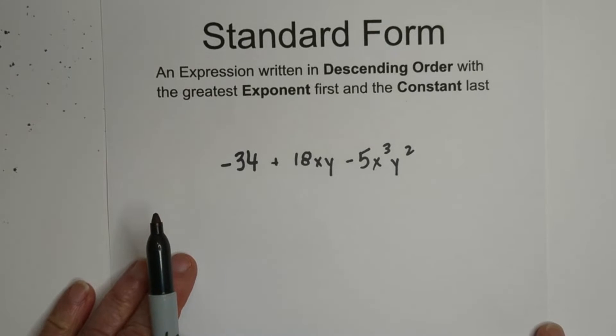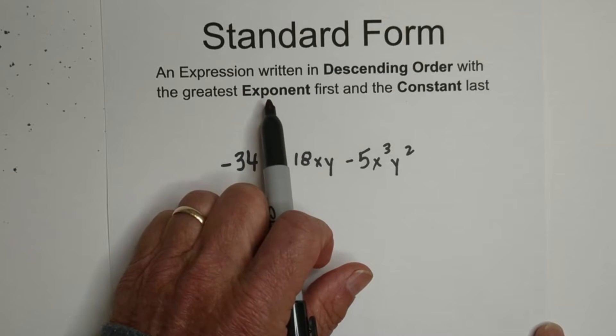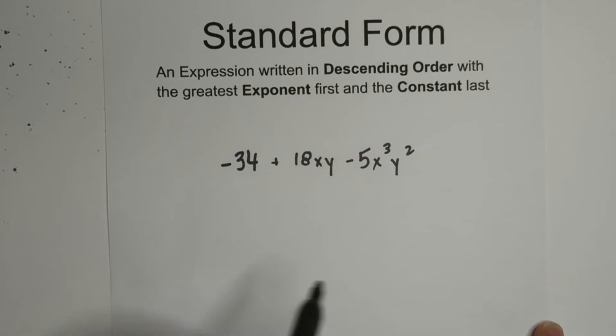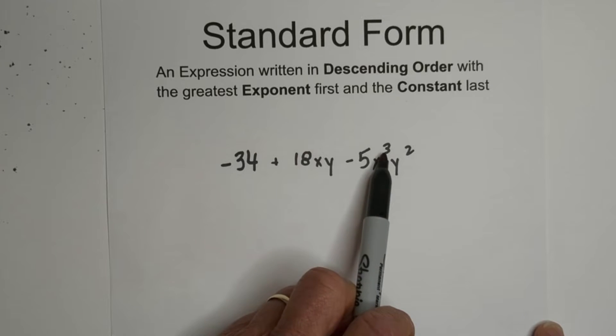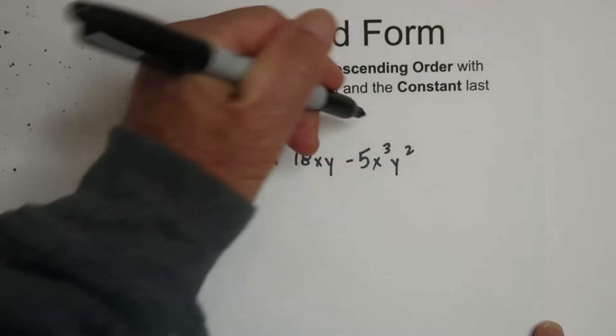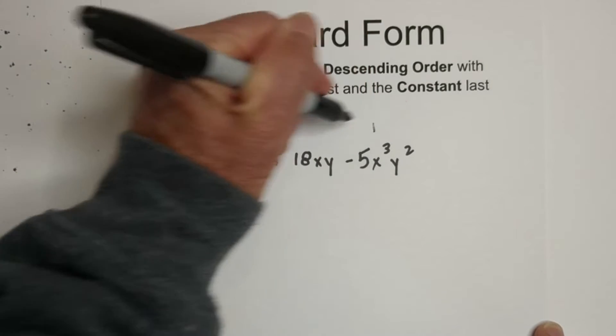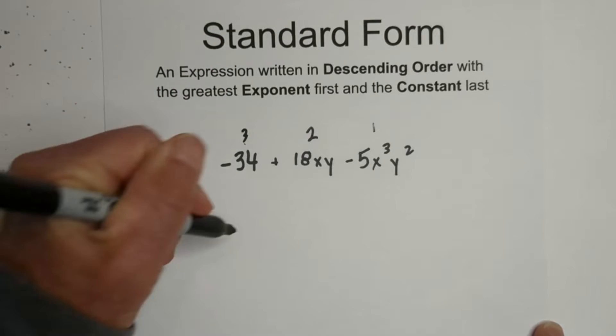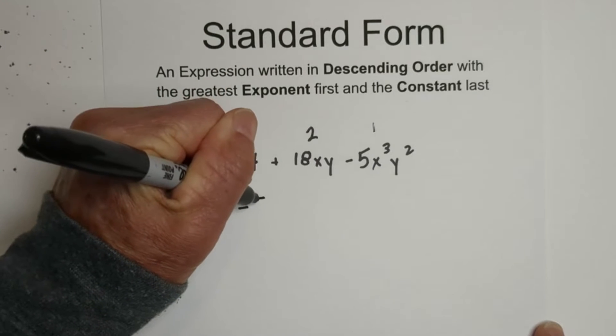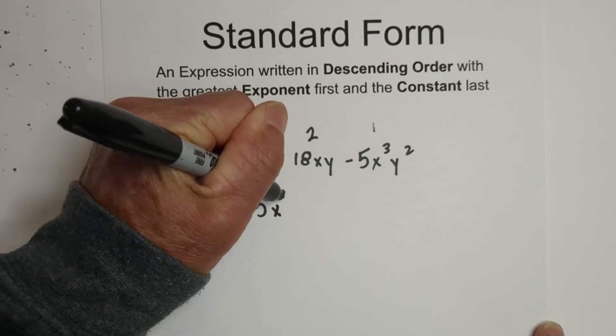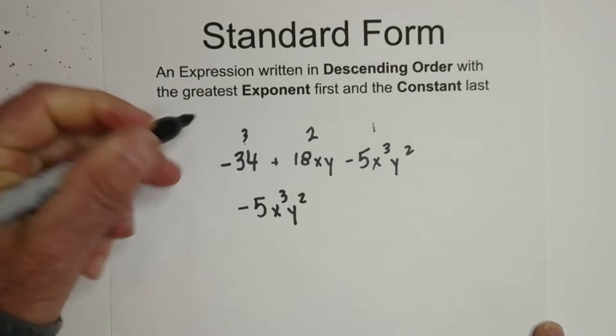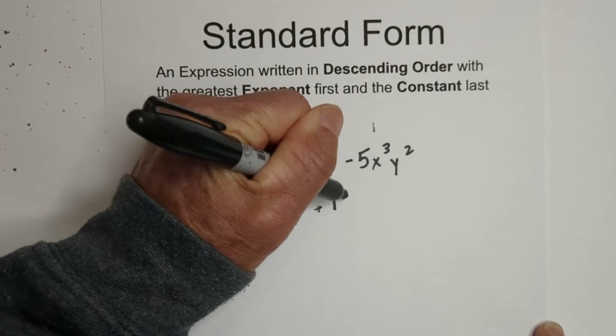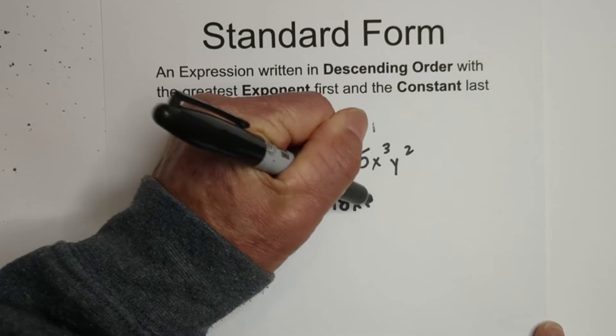So let's look at an example. In this example, we have the constant here, we have to the first power here, and we have cubed here. So this will be the greatest, so I'm going to number it one, and then it'll go to here and then three. So I'm going to rewrite it in standard form: 5x³y² + 18xy - 34.